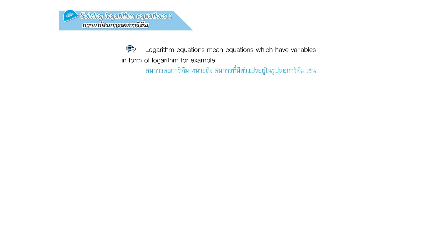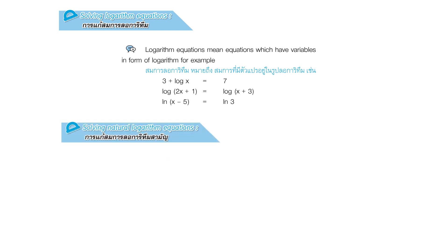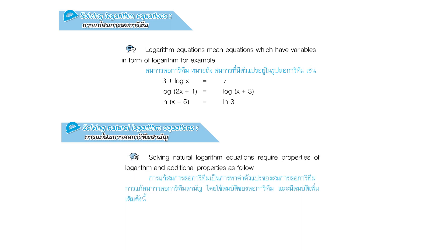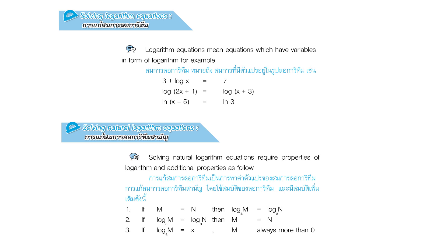Page 148. Solving logarithm equations. Logarithm equations are equations which have variables in the form of a logarithm. For example: 3 plus log x equals 7; log(2x + 1) equals log(x + 3); ln(x − 5) equals ln 3. Solving logarithm equations requires properties of logarithm and additional properties. Property 1: if m equals n, then log m base a equals log n base a.